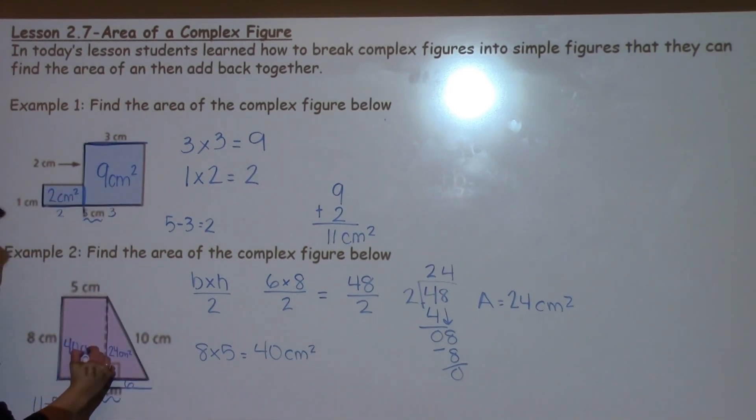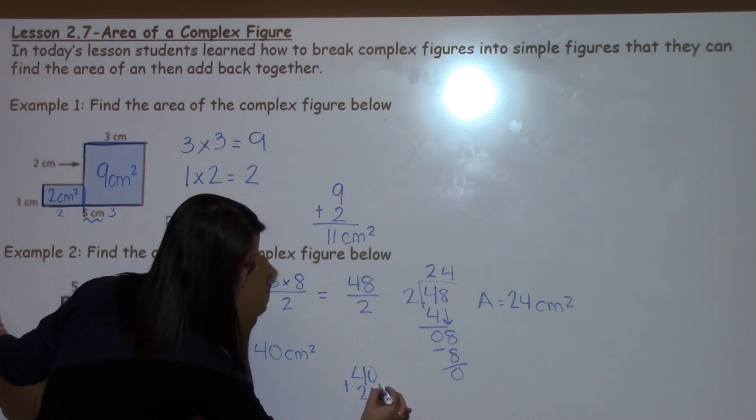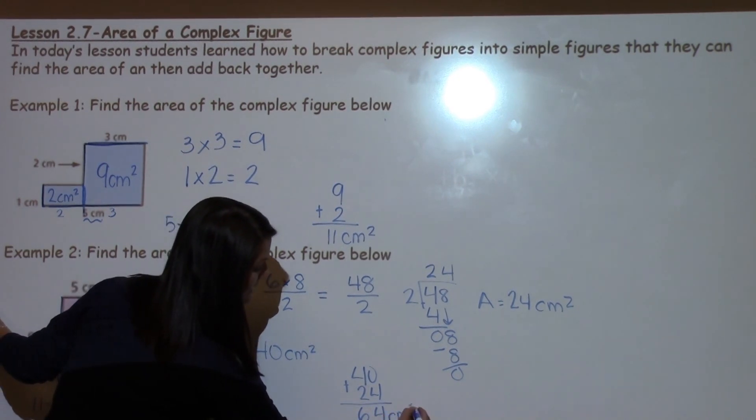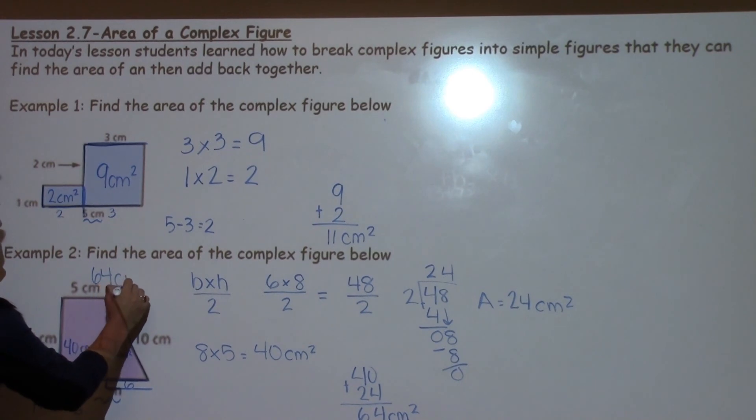I write it here to make sure I haven't left anything out. I've taken care of both parts of my complex figure so now I just need to add them together. 40 plus 24, 0 plus 4 is 4, 4 plus 2 is 6. I'm still working in area so my final answer is 64 centimeters squared.